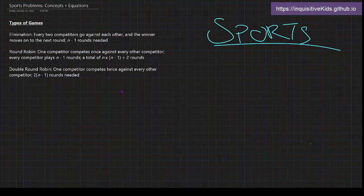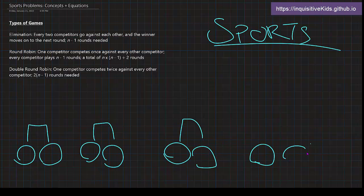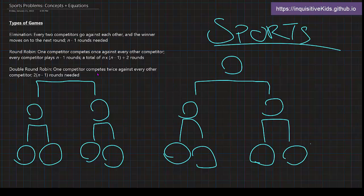First is elimination. When you have multiple chains, every two competitors go against each other. Winners move up, losers are eliminated. Then they compete again and repeat until there's one more competitor. Those final two compete for the gold medal. That's how elimination works.